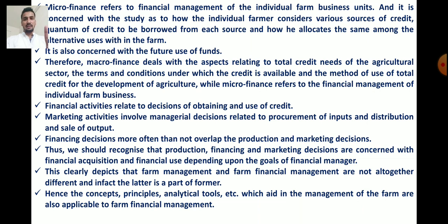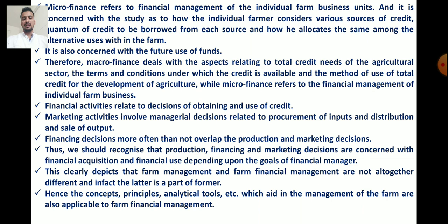Keep in mind: macro finance deals with aspects related to the total credit need of the agriculture sector, the terms and conditions under which credit is available, and the method of using total credit for the development of agriculture as a whole. Micro finance, on the other hand, refers to the financial management of individual farm businesses. This is the major difference — macro finance deals with financial management at the aggregate level, while micro finance deals with a particular individual or business unit.